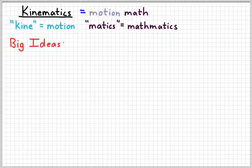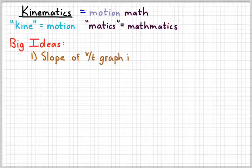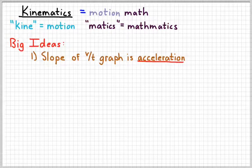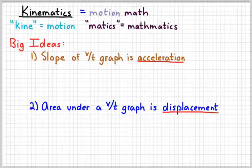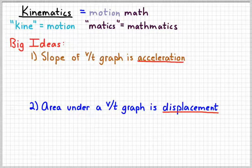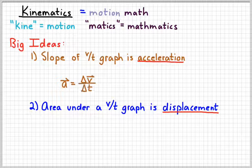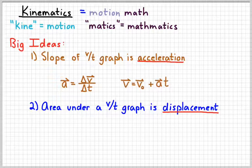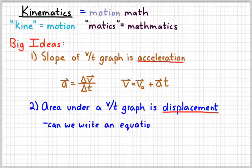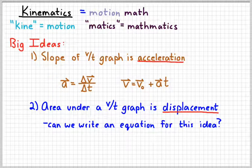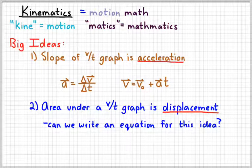Now, here are two big ideas. Big idea number one is that the slope of a velocity versus time graph gives us the acceleration. Big idea number two is that the area under a velocity time graph gives us the displacement. We can write two equations to represent big idea number one. What our goal is here is to see if we can write an equation to represent the displacement starting with the area under our velocity versus time graph.